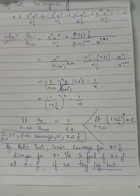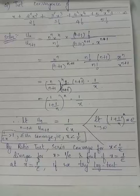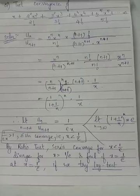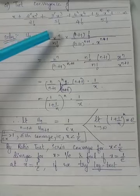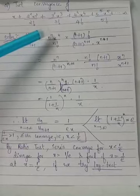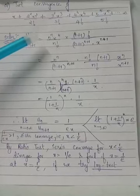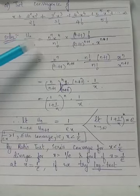Looking at the expression of u_n, we can write the expression of u_{n+1} by just replacing every n in the expression of u_n by n+1. Wherever n appears in the expression of u_n, we will replace it by n+1 to obtain u_{n+1}.